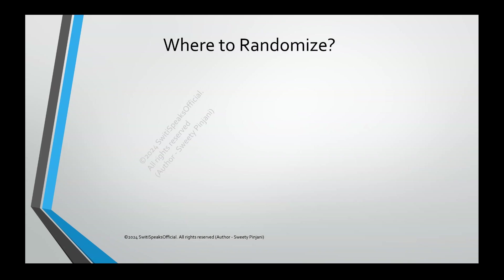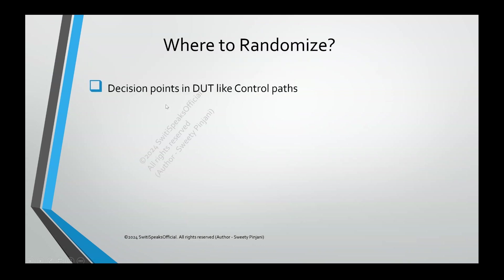Now where are you going to apply randomization? First, you need to randomize the places where decisions change — the decision points. For example, there is an enable signal in a chip: until and unless the chip is not enabled, the functionality will not work. In a MUX, depending on the value of the select line, you will get the output. So wherever you have decision points in your DUT — like the control path. Enable is one control path controlling your chip, and select is one controlling the output of your MUX. These you need to definitely randomize.